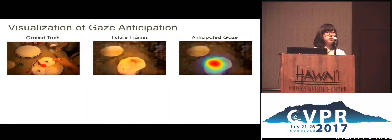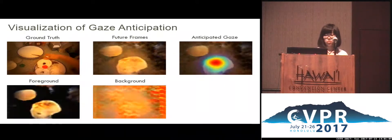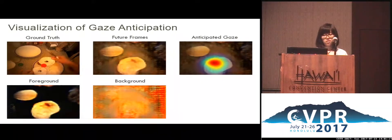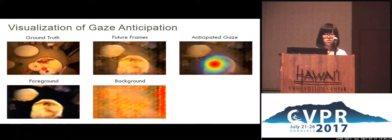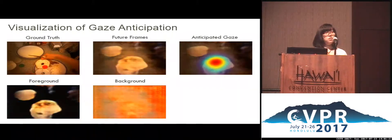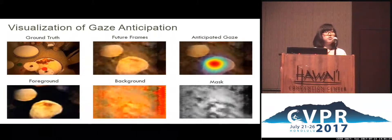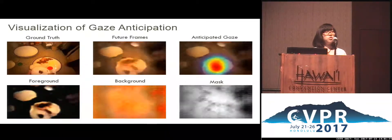In addition to the moving foreground objects, there is also complex background motion involved in egocentric vision. Thus, we propose to split the future frames into two components, which can separately learn to model the foreground and background motions. From here, we can clearly see that the food as well as the plates get highlighted in the foreground, whereas the table surface is the background, showing uniform color in the background stream. At last, we use a mask to merge the foreground and background motion together to produce the future frames.